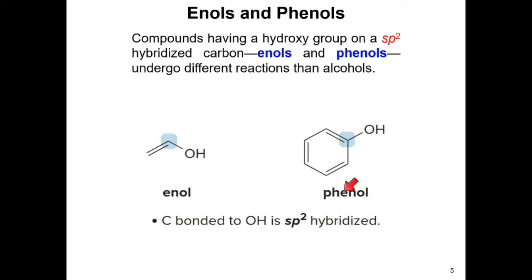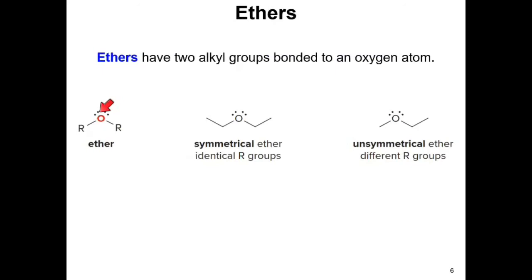Here's the general structure of an ether: an oxygen bonded to two alkyl groups, which can be identical or different. If the two alkyl groups are identical, we call it a symmetrical ether; otherwise, it's an unsymmetrical ether. An example of a symmetrical ether is diethyl ether, and this one is called ethyl methyl ether. There are several ways to name ethers, which we'll look at later.